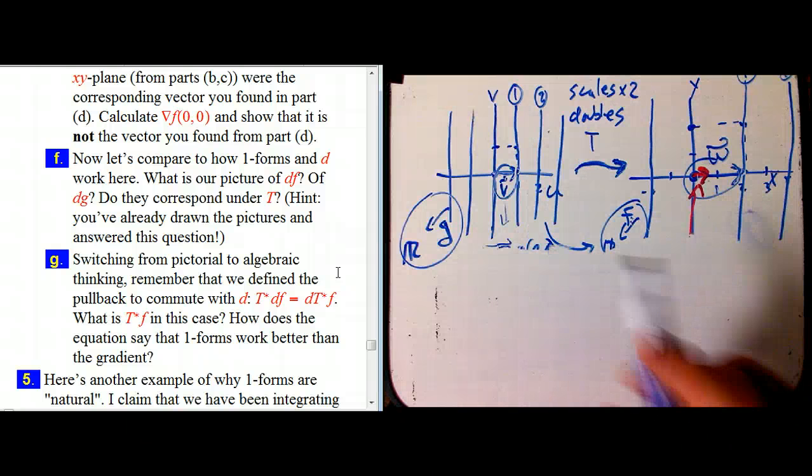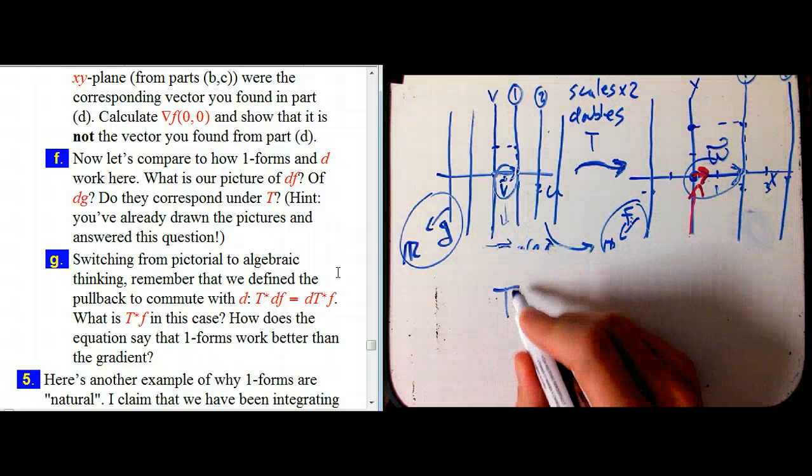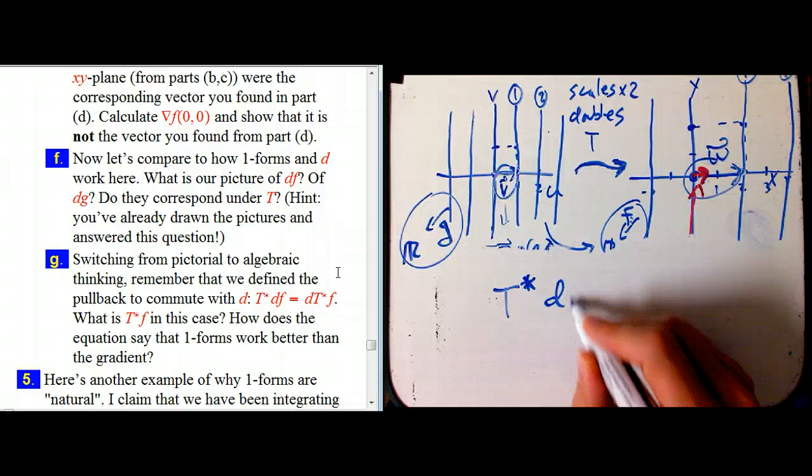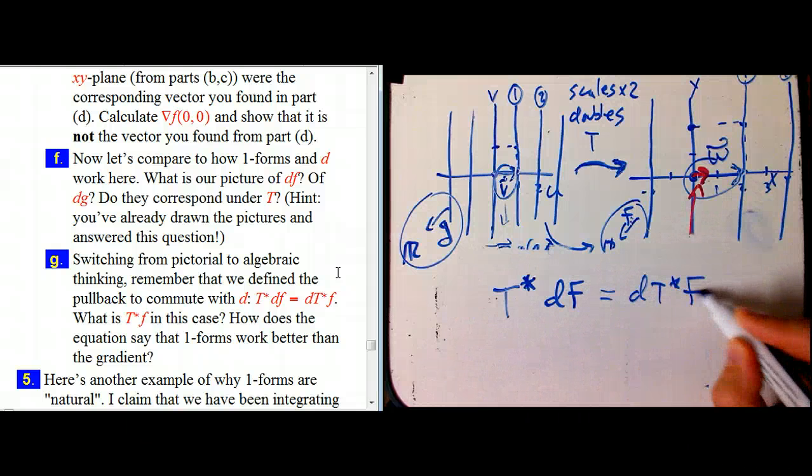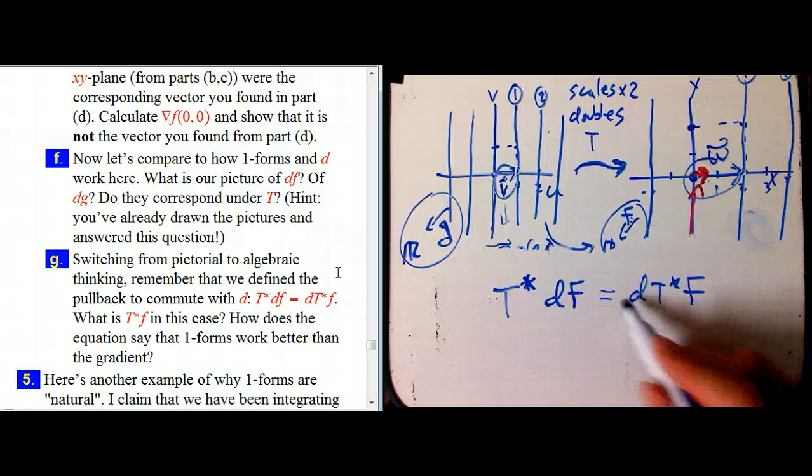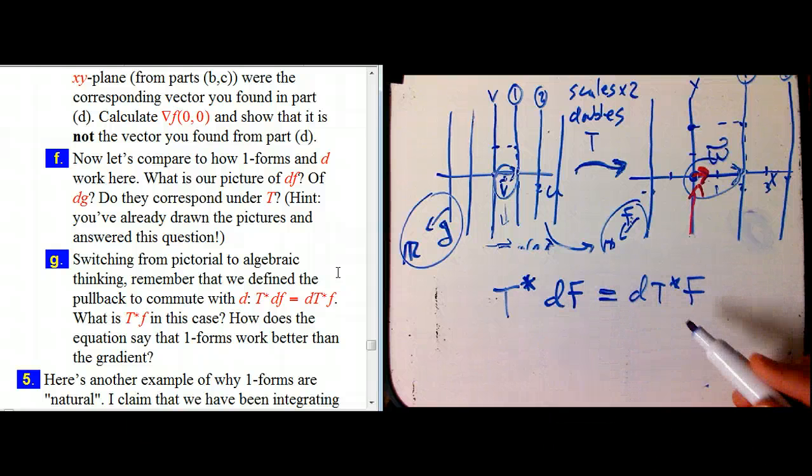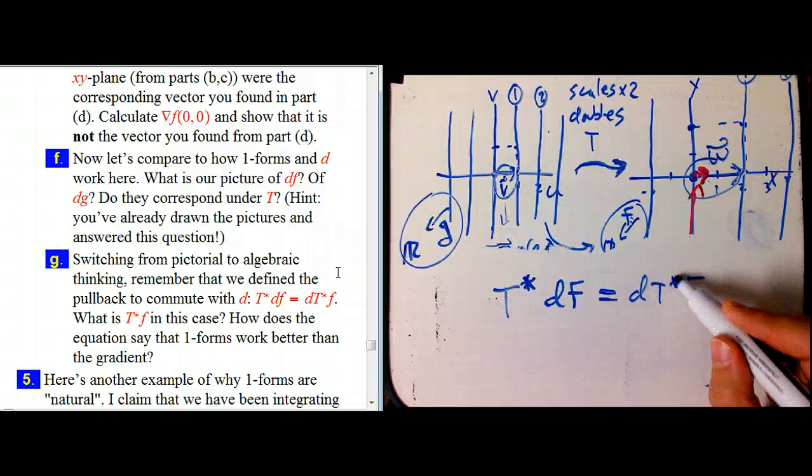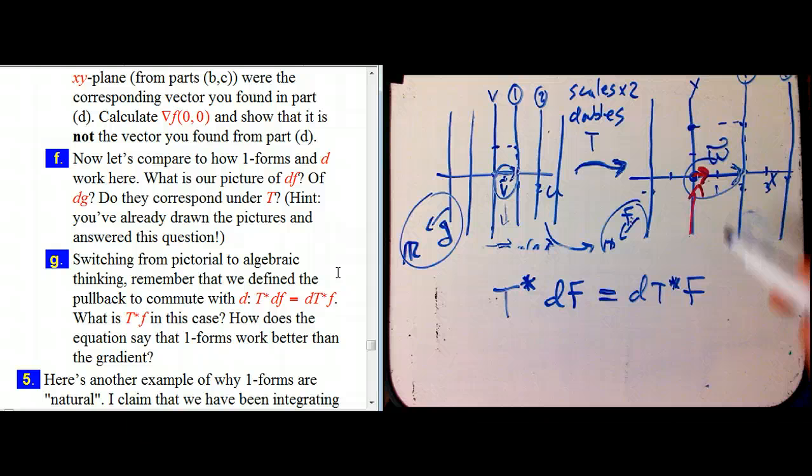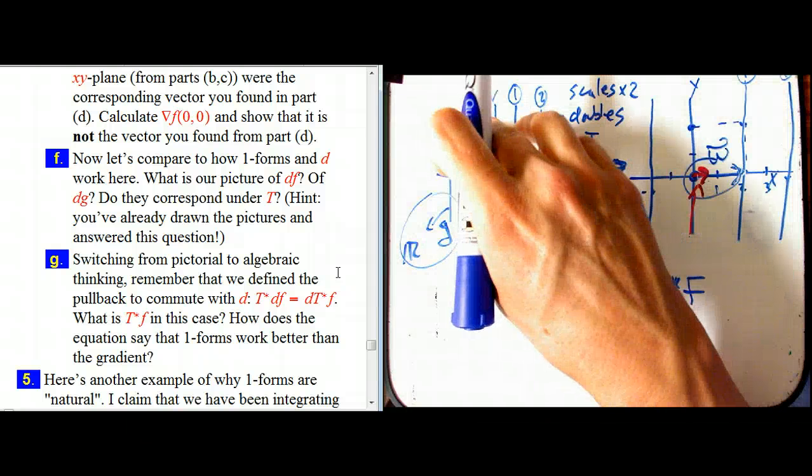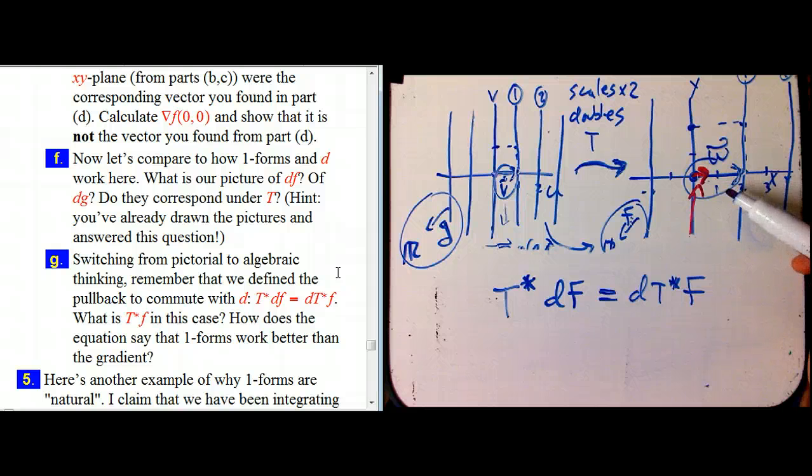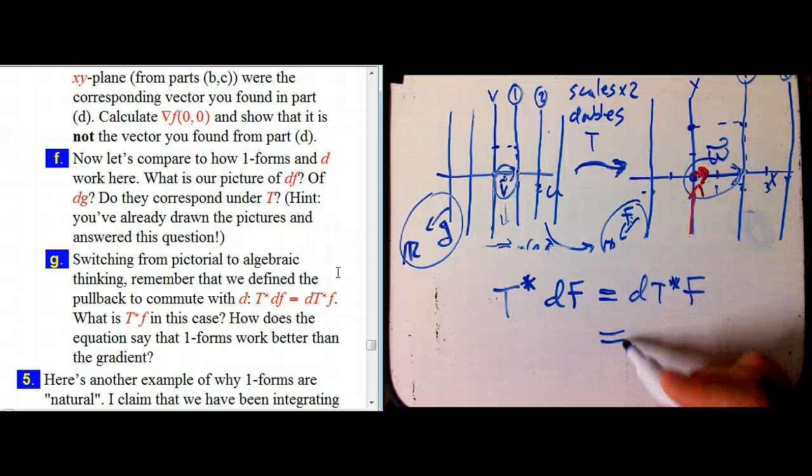What about algebraically? In the last few videos we've been using this yoga of pulling back a function or a one form and a function. And the assertion was that the T star commutes with the d. It's a naturality property of the d operation. And this is really at the heart of things.